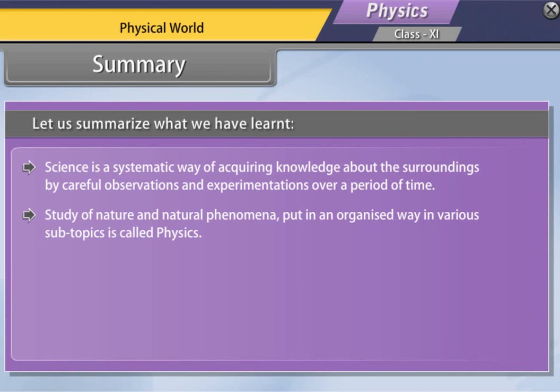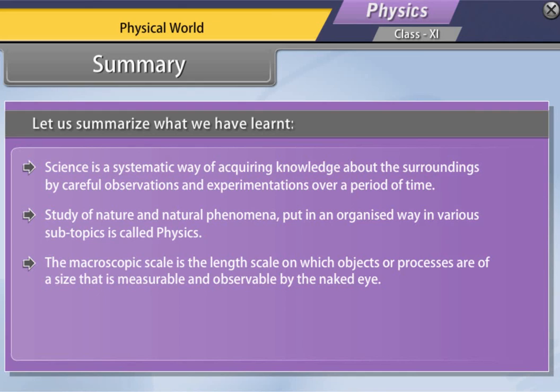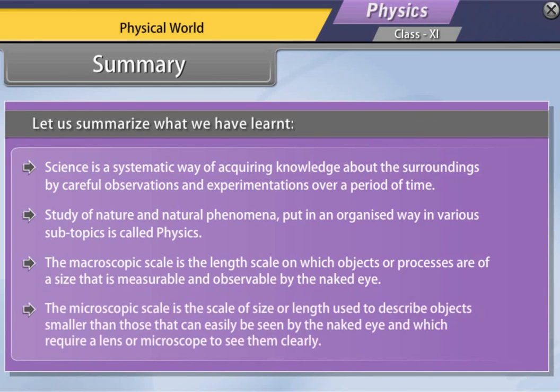The macroscopic scale is the length scale on which objects or processes are of a size that is measurable and observable by the naked eye. The microscopic scale is the scale of size or length used to describe objects smaller than those can easily be seen by the naked eye and which require a lens or microscope to see them clearly.